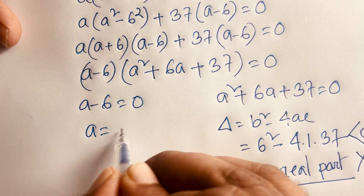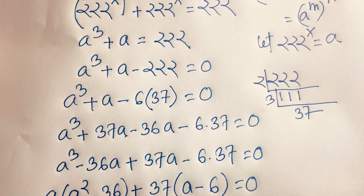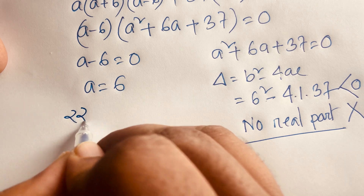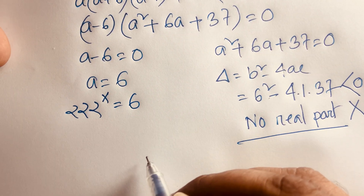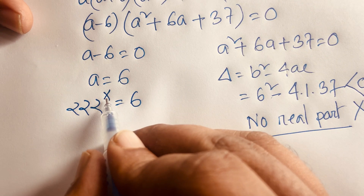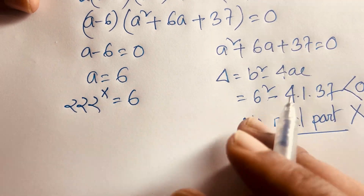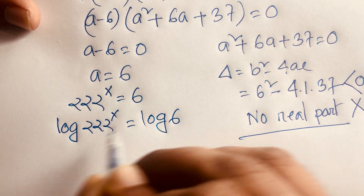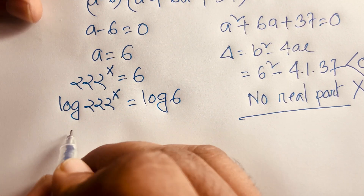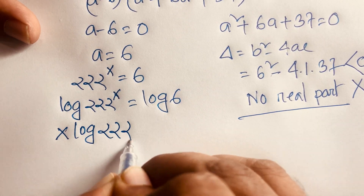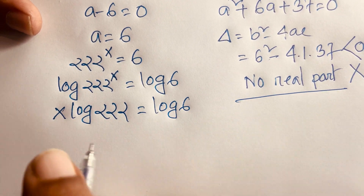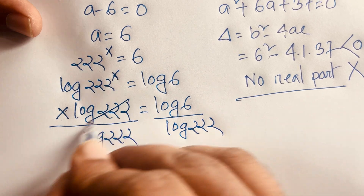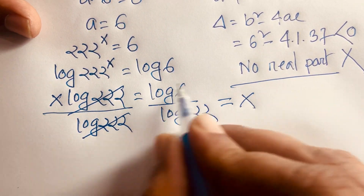Recalling that a equals 222 to the power x, we have 222 to the power x equals 6. To find x, we apply the natural logarithm to both sides: x times log 222 equals log 6. Dividing both sides by log 222 gives x equals log 6 divided by log 222.